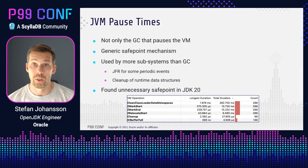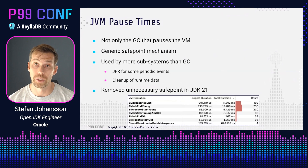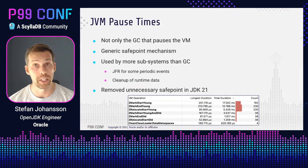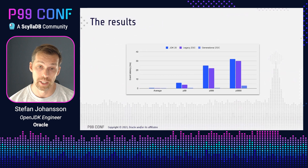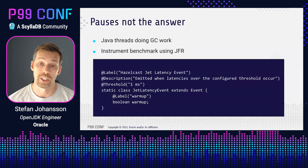We see it's executed as many times as the ZGC pauses — the ZMarkStart and related pauses — but the longest duration and total duration is much longer for this cleanup compared to the GC pauses. We couldn't really understand why, and after some analysis we realized that we don't really need to do all those invocations. So in JDK 21 we've been able to reduce this to only four invocations for the same run, and the duration is also shorter. This is a pretty good improvement between JDK 20 and JDK 21, and all modes of ZGC in JDK 21 benefit from this — both generational and legacy mode.